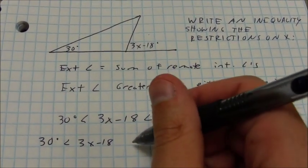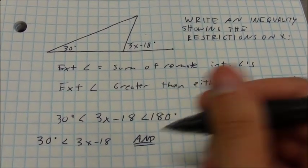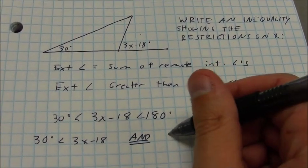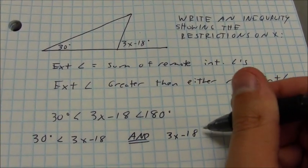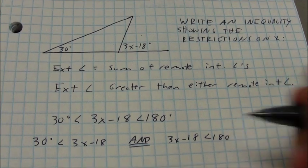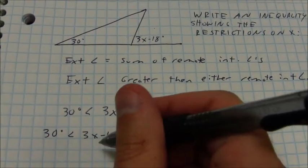3x minus 18 is greater than 30, and make sure you have that connecting word there. Both of these things have to be true. 3x minus 18 is less than 180, and you can go through and you can solve this.